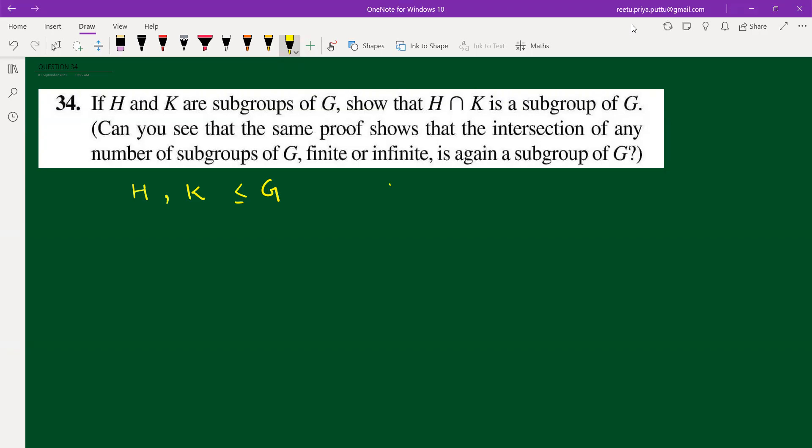To show this is a subgroup, we need to show two or three things. First, we have to show the identity element. Second, if I take a and b from that set, we have to show that ab inverse should be there in the set. Then we will be able to say that yes, it is a subgroup.